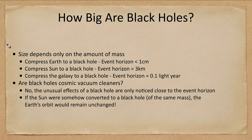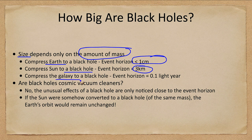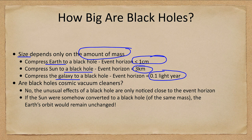So what is the size of a black hole? The size depends on only one thing: the amount of mass contained inside, which determines what the size of the event horizon and Schwarzschild radius will be. You could compress any object to a black hole, including Earth — if you could compress it down to one centimeter or less, the Earth would be a black hole. The sun compressed to a black hole would have an event horizon of about three kilometers. Our entire galaxy compressed to a black hole would have an event horizon of about a tenth of a light year.